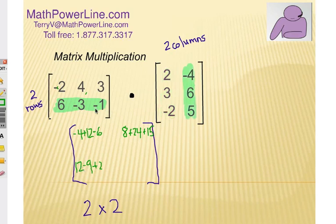Lastly, we have this row compared to that column. So we're going to do 6 times negative 4, negative 24. Negative 3 times 6, which is negative 18. And negative 1 times 5, which is negative 5.